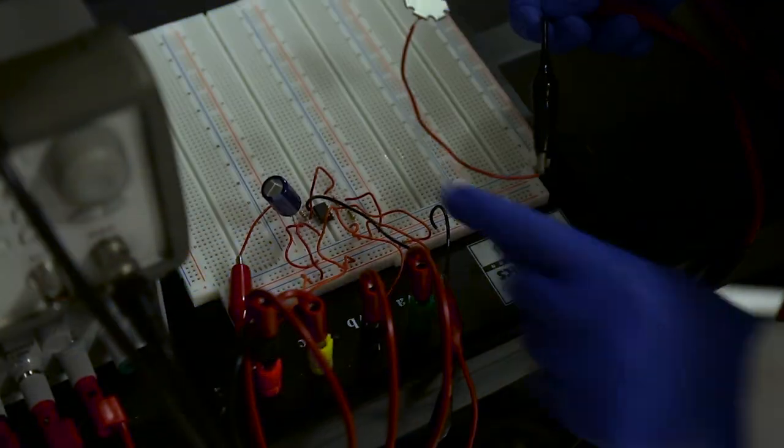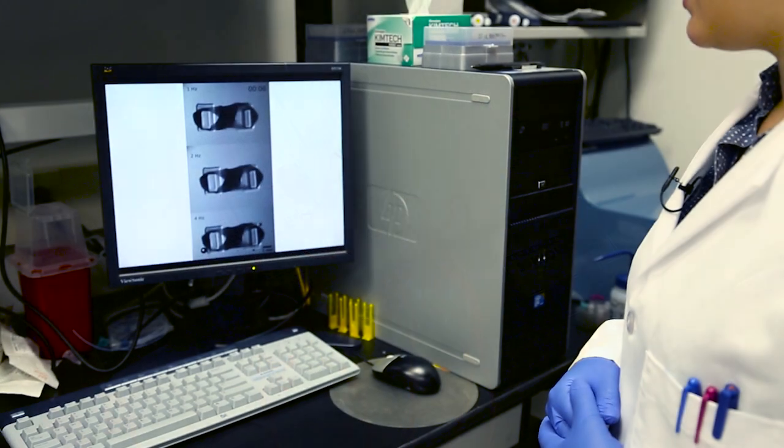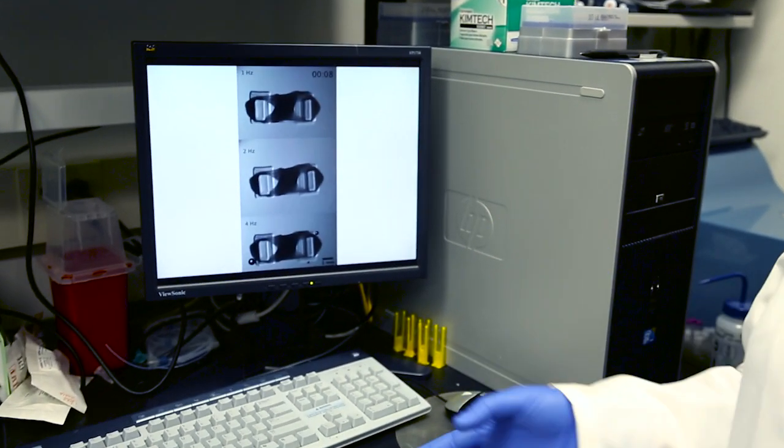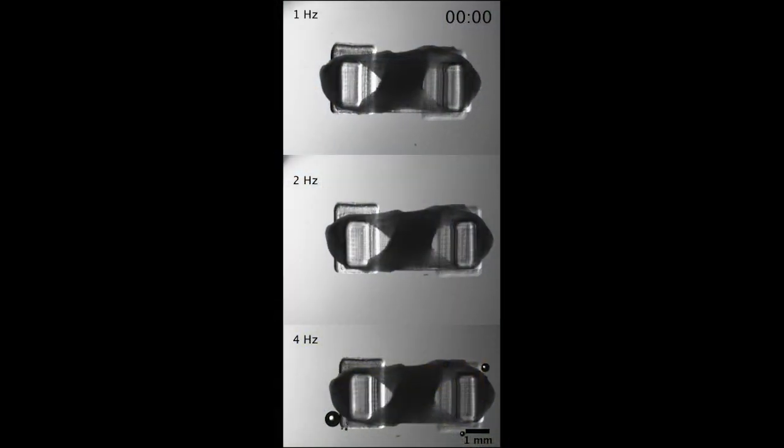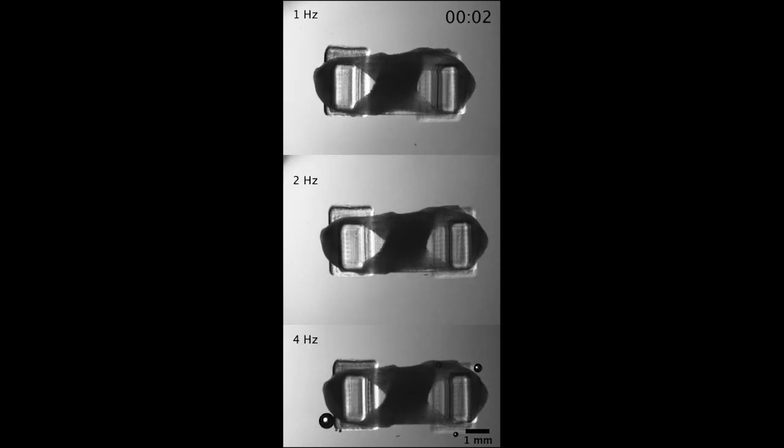Earlier versions used cardiac cells, but the team found skeletal muscle cells gave them more control. They can make them contract, either with an electric pulse or with light. As we increase the frequency with which we stimulate the biobots, we can actually get them to move faster.